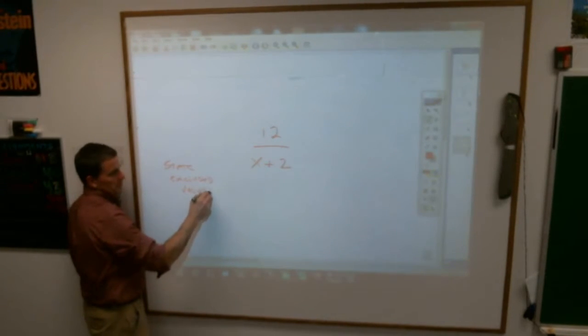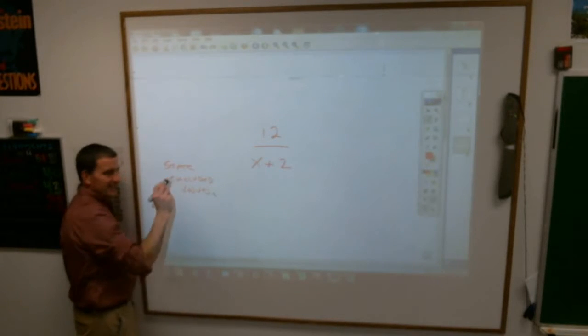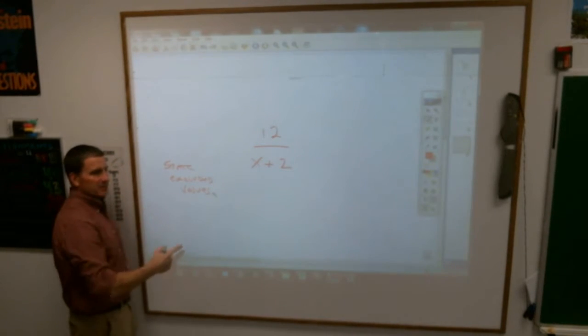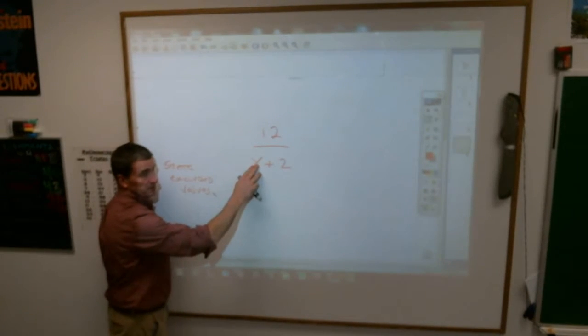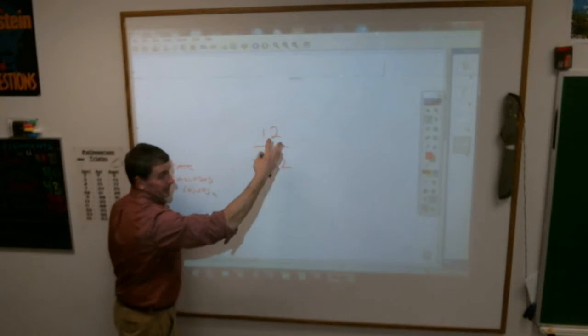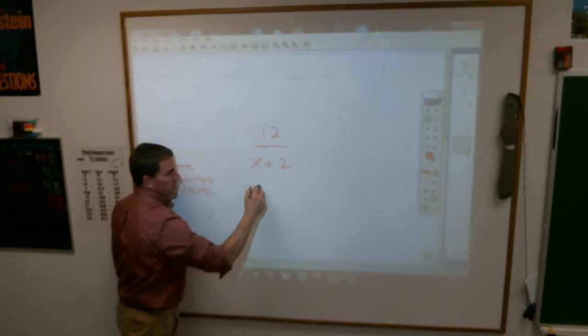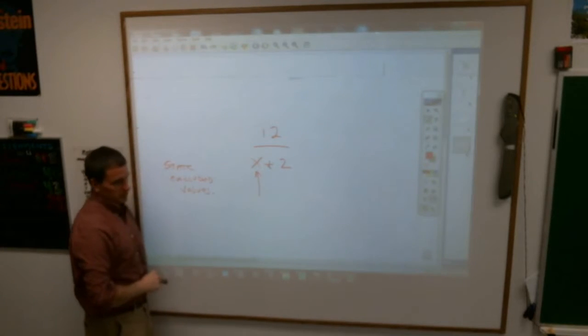Which means, what cannot x be that would give you a zero on the bottom? Now, don't say zero, because x could be zero, because zero plus two gives you a two on the bottom, and you could do that. You need to know what number plus two would give you a zero there.